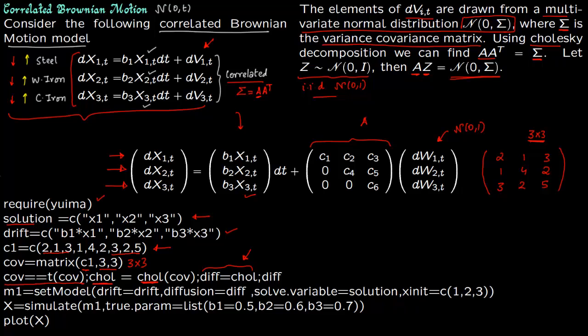So notice that this is the diffusion of the multivariate stochastic differential equation and this is the drift. So we're going to set the model drift as this drift right here which is this term, diffusion as diff. The diffusion is the Cholesky decomposed, that is this part, and we are going to solve the variables solution.